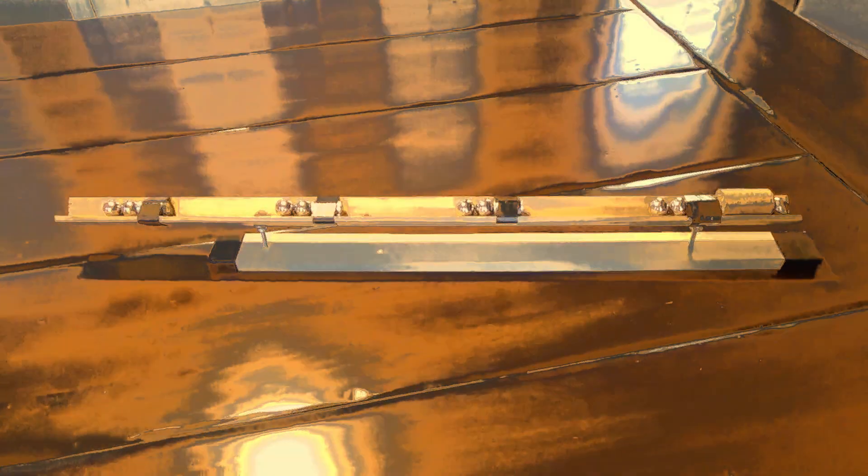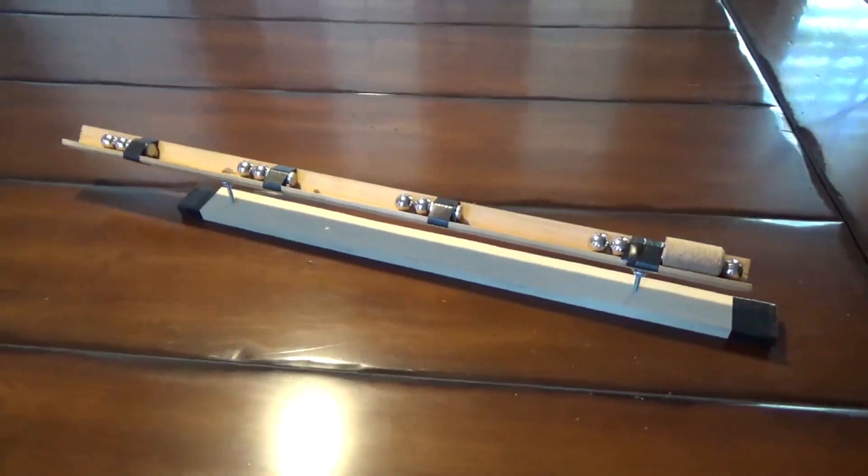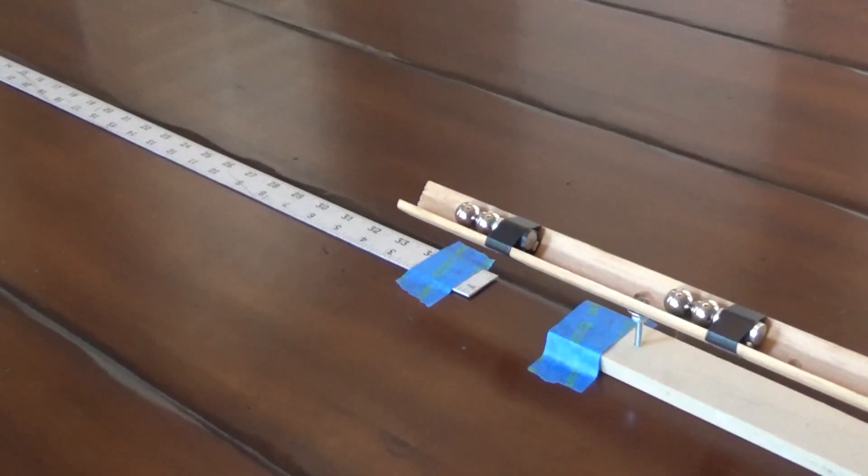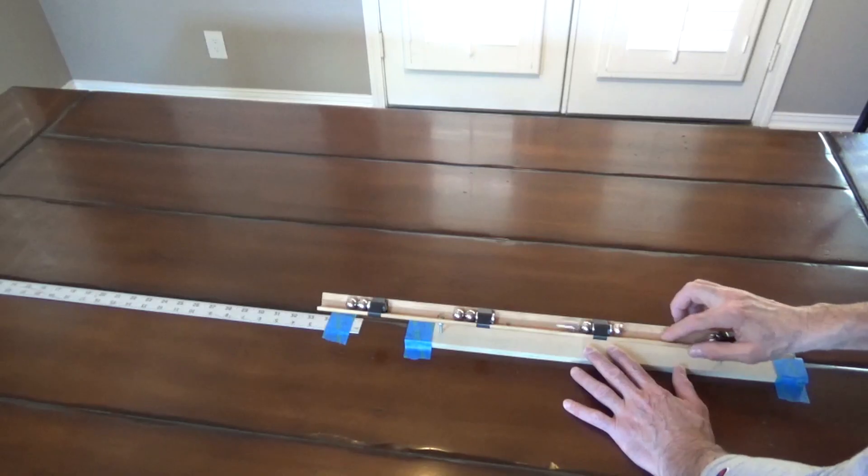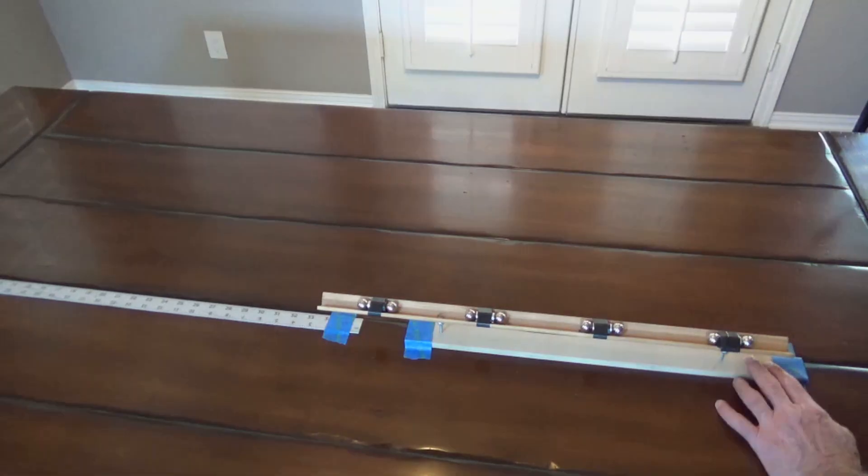So then I was wondering, how much boost does each stage provide? So I set up a ruler and ran tests with one stage, two stages, three stages, and four stages.